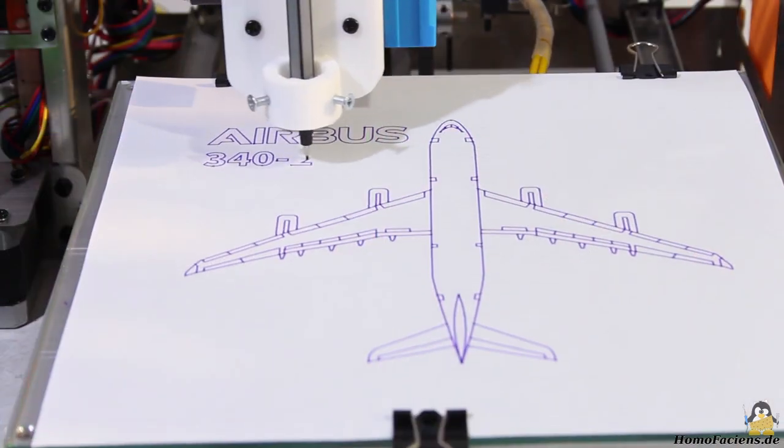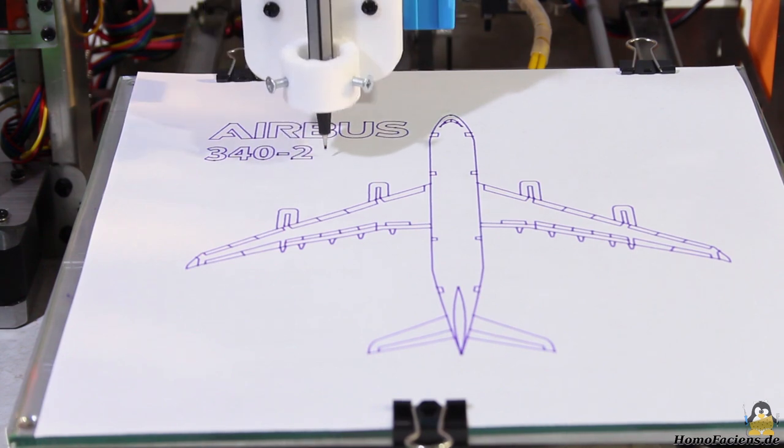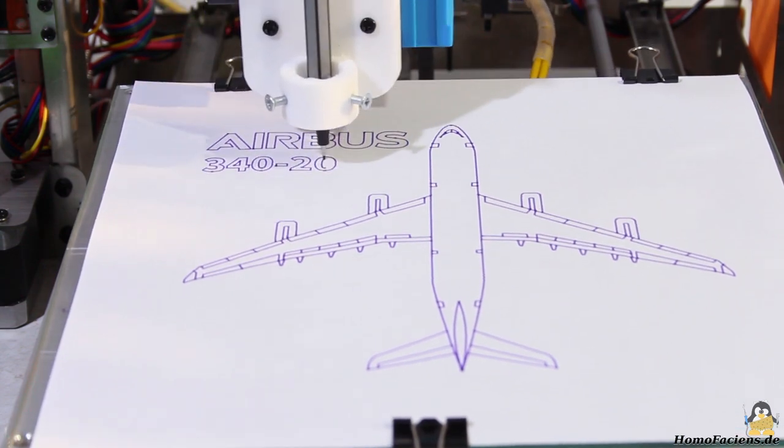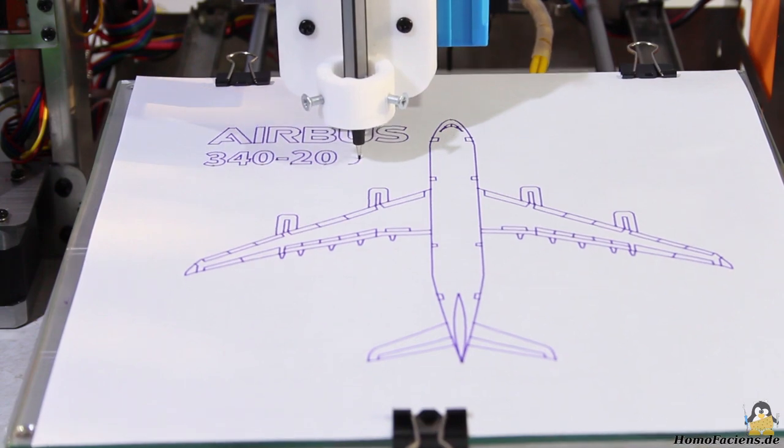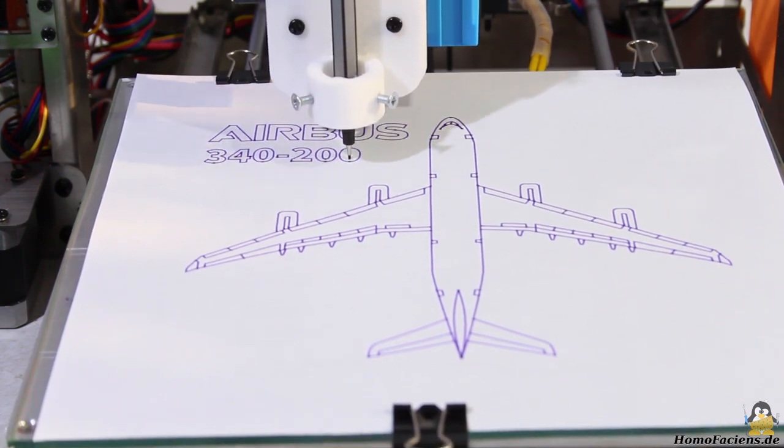The axes of the Zonestar are orthogonal, so that the points in space correspond to Cartesian coordinates, by what the math behind the movement of the machine is straightforward.